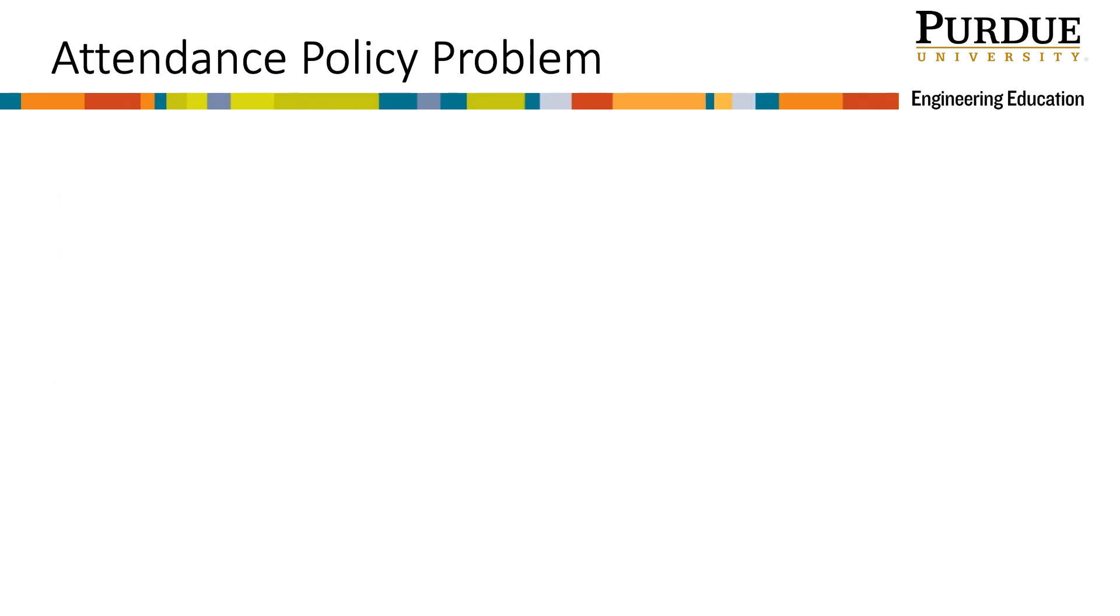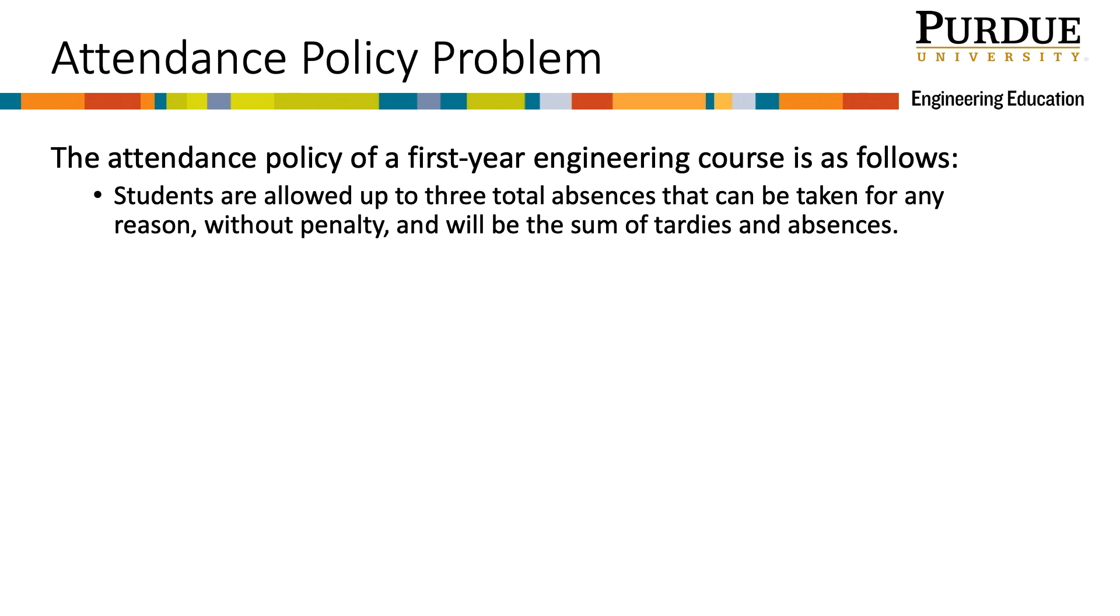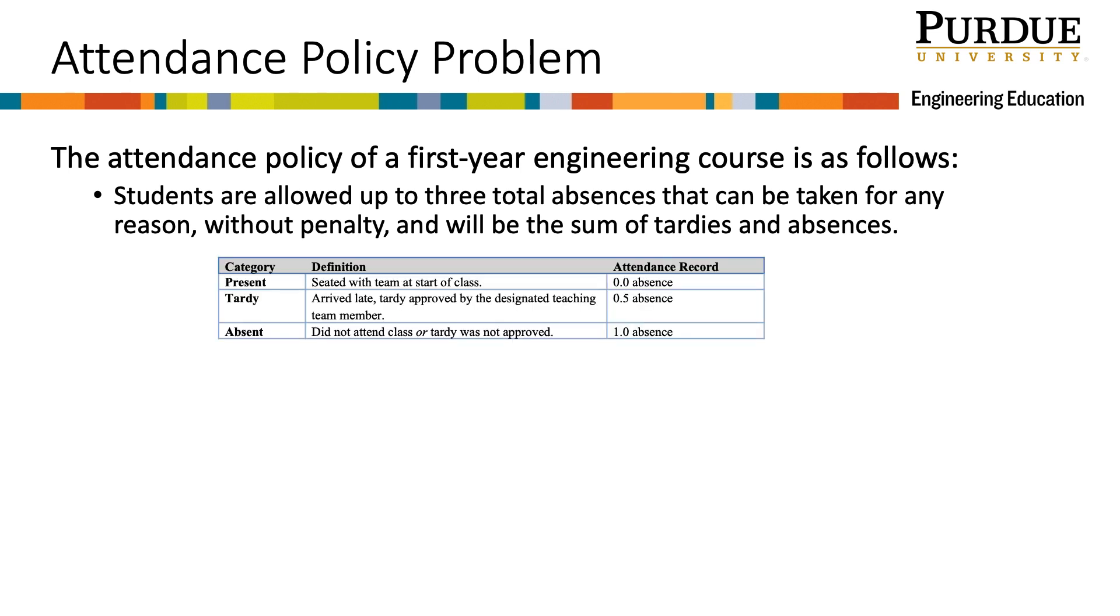Let's work on a flowchart for an attendance policy problem. The attendance policy of a first year engineering course is as follows. Students are allowed up to 3 total absences that can be taken for any reason, without penalty, and will be the sum of tardies and absences. The chart included shows the value of each absence is 1 and the value of each tardy is .5.